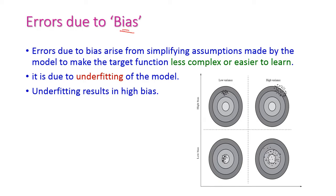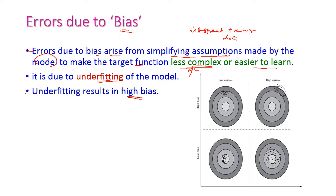Errors due to bias come from the assumptions made by the model to make the target function very less complex or easier to learn. Very less complex means that comes because of underfitting — underfitting means insufficient training data. Underfitting results in high bias.